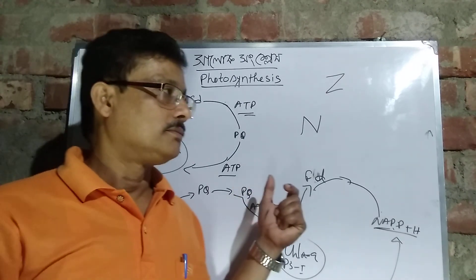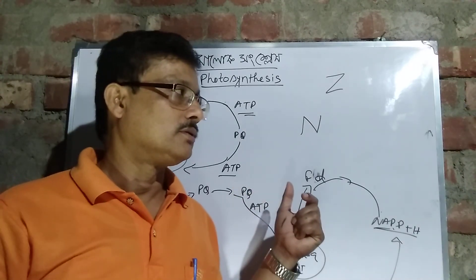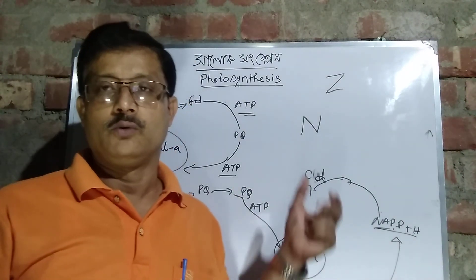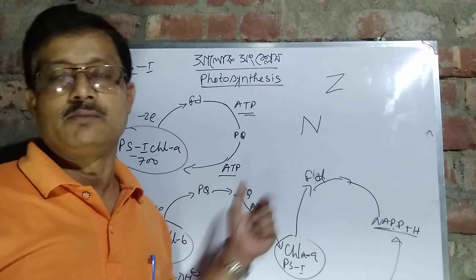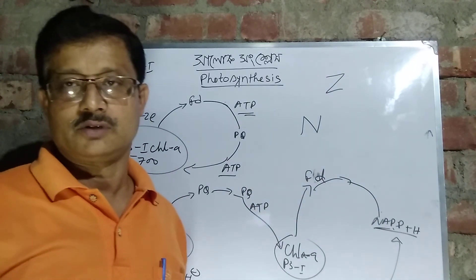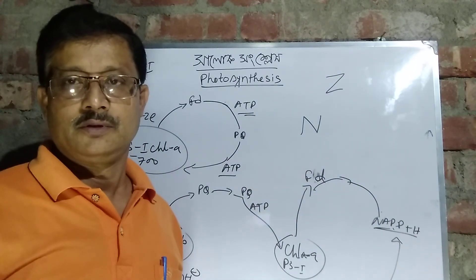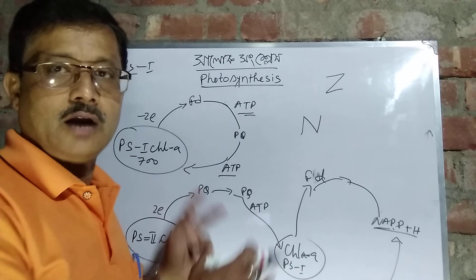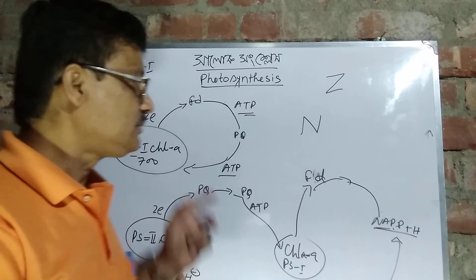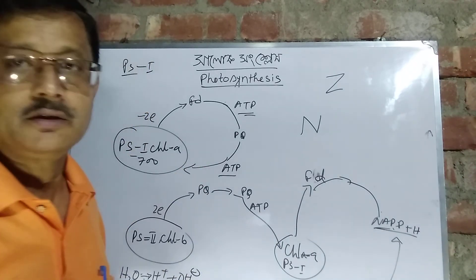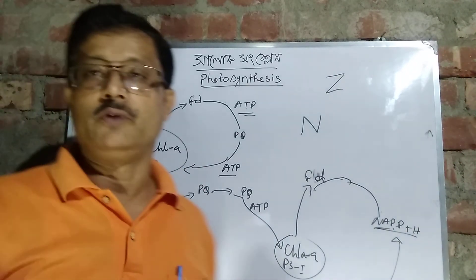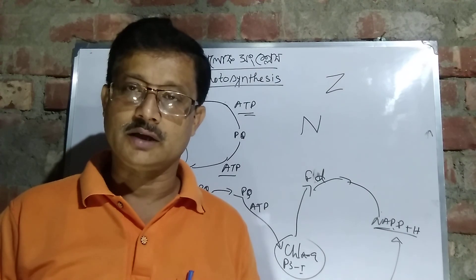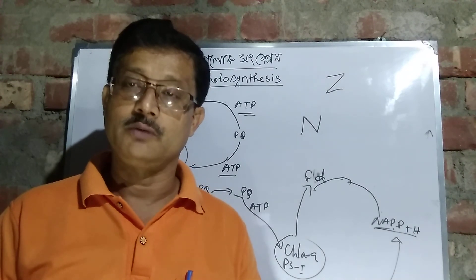The electron will follow the Z-scheme, which is equal to the Z-scheme. This is the factor of the system — which is the chlorophyll in the Z-scheme, which is the factor of the light reaction.